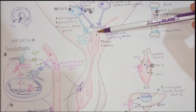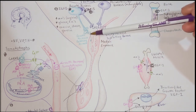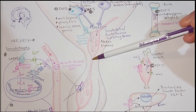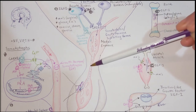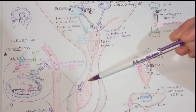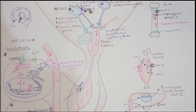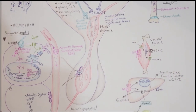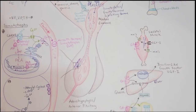The blood is going to carry growth hormone releasing hormone — GHRH — down to the second capillary bed within this portal system, which is present within the anterior pituitary gland.